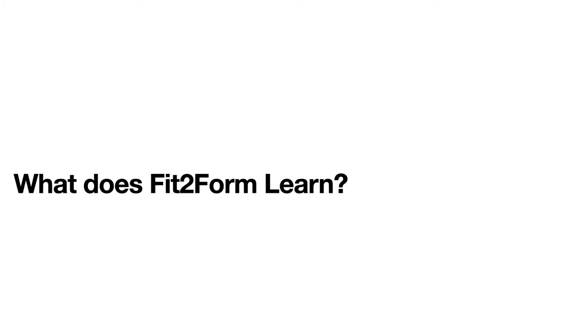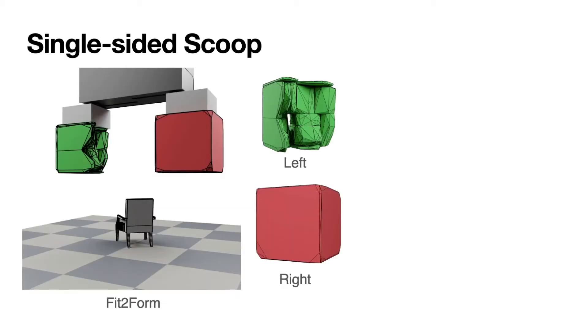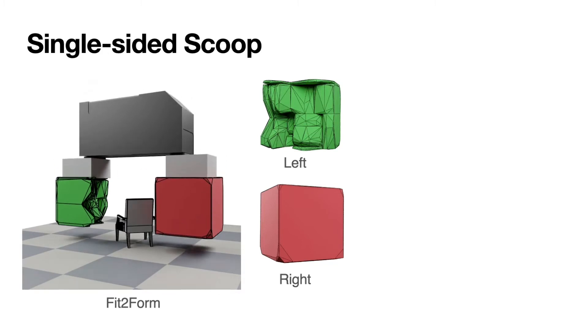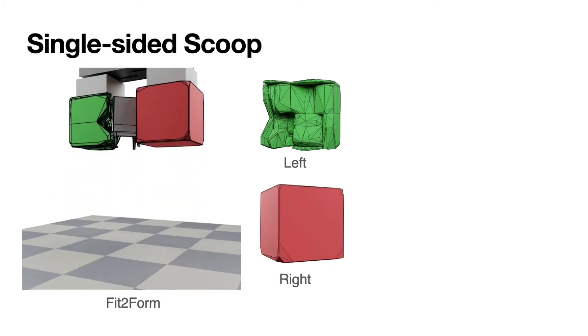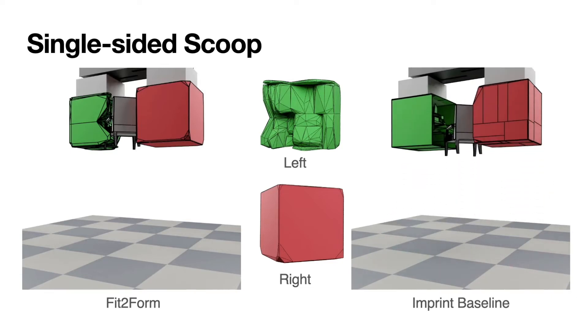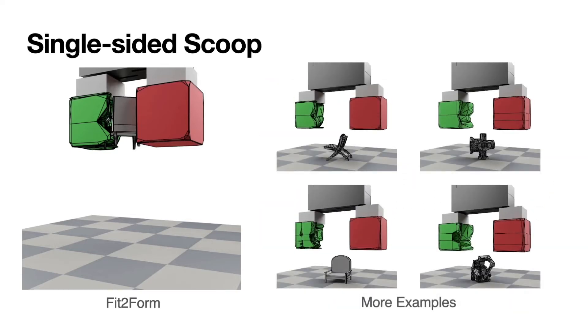In the following slides, we review the finger generation strategies learned by Fit2Form. The first strategy is single-sided scoop, where one of the generated fingers is hollow and the other has a flat face. During grasping, the flat face pushes the object inside the hollow cavity to successfully grasp the object. On the right is the imprint baseline for comparison. Here are more examples of single-sided scoop.